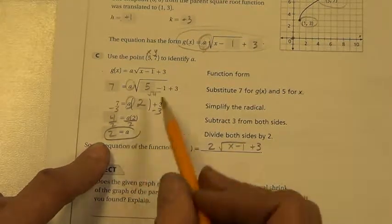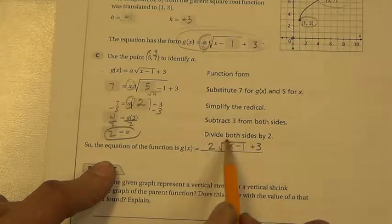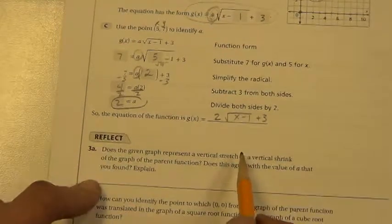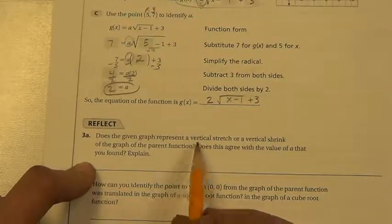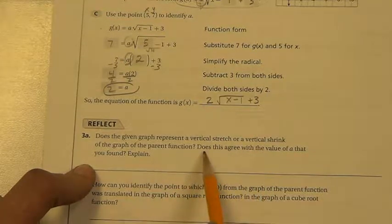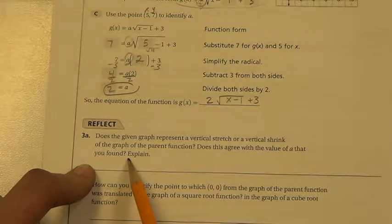So now we plug that back into this equation, and we have g of x equals 2, square root x minus 1, plus 3. Does the given graph represent a vertical stretch or vertical shrink of the graph of the parent function? Does this agree with the value a that you found? Explain.